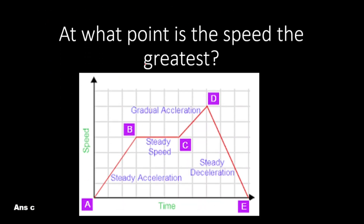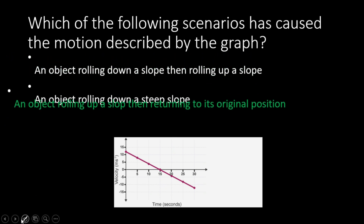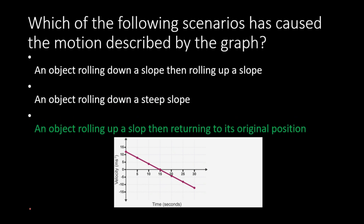Next question: at what point is the speed greatest? The speed is greatest at point C. Which scenario caused the motion described by the graph? The correct answer is: an object rolling up a slope and then returning to its original position.